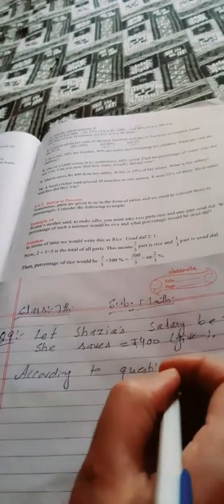Shazia saves 400 rupees. According to the question, 10% of her salary equals 400 rupees. So 10% of X equals 400.